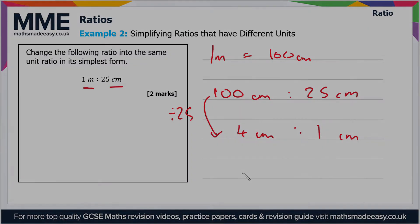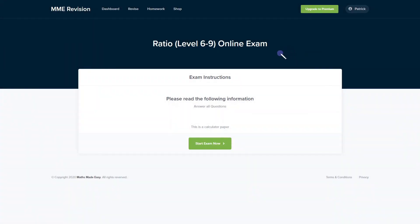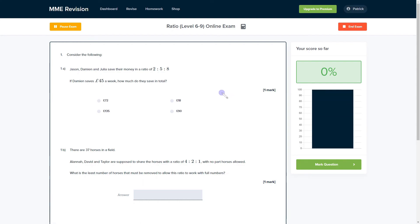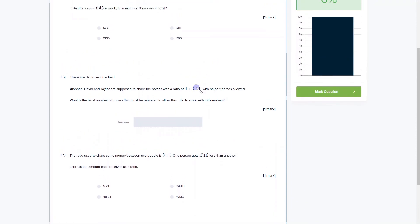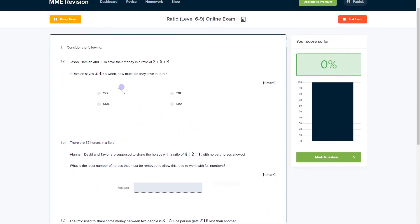So if you'd like to practice some harder ratio questions then you can have a go at our online exam. This is available through our revision platform and there's a variety of different questions, loads of different question types as well. So you get instant feedback on each and every one of them.